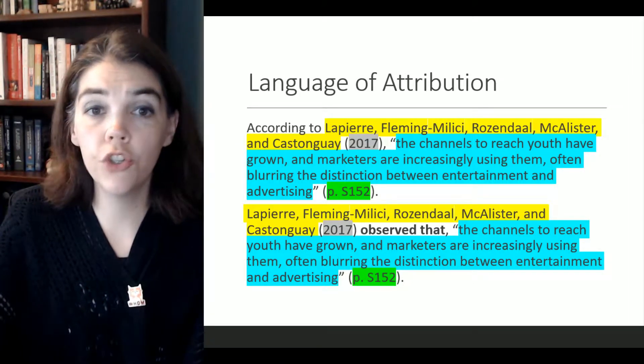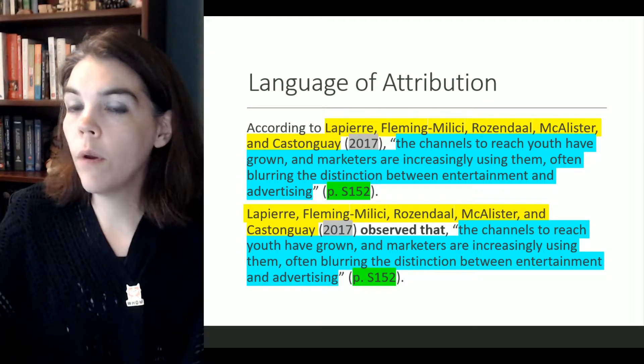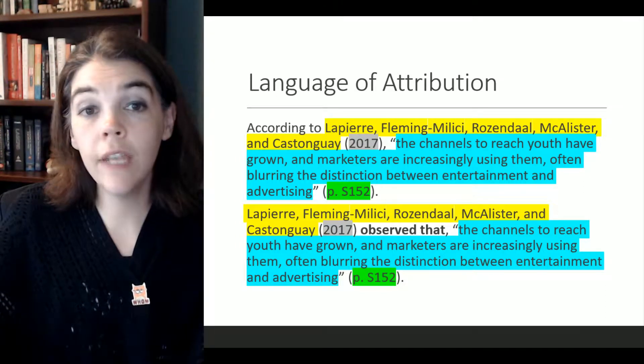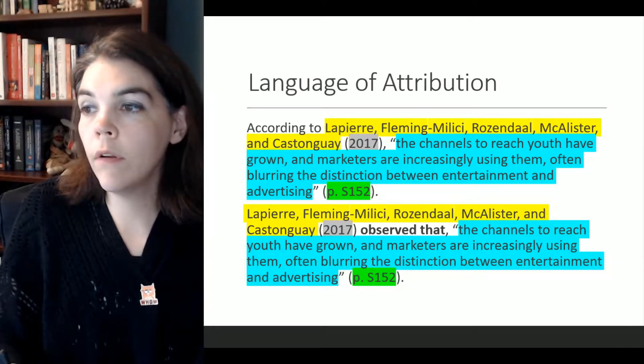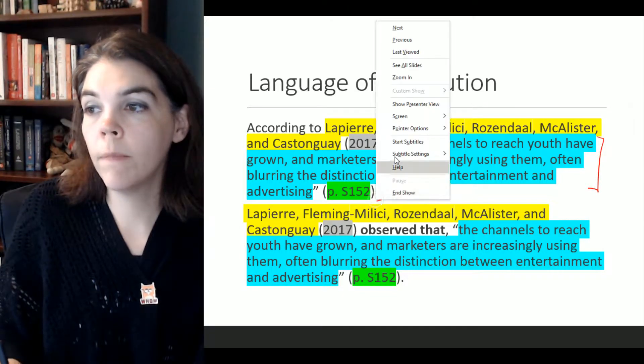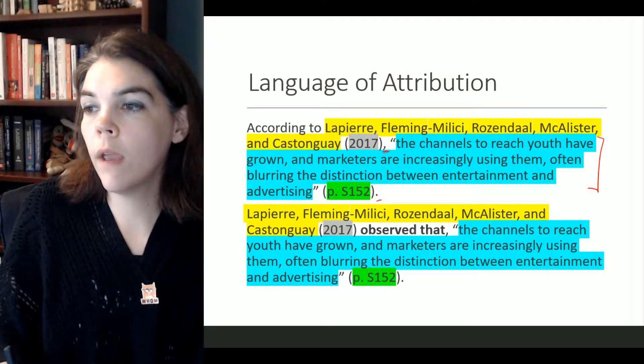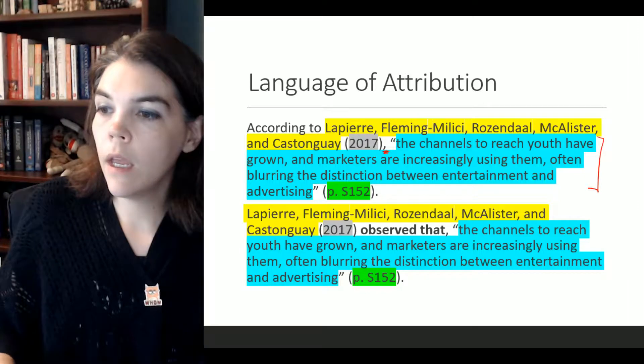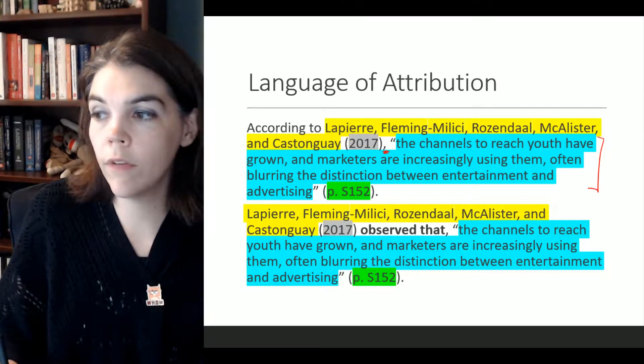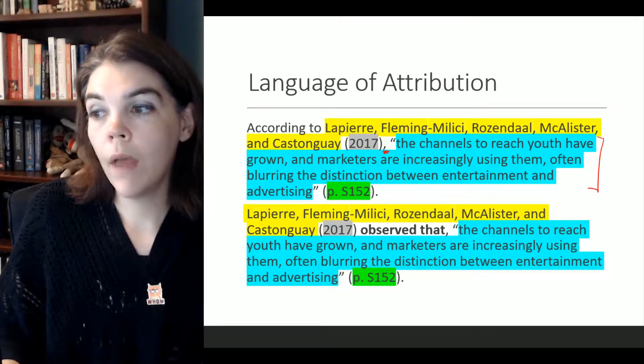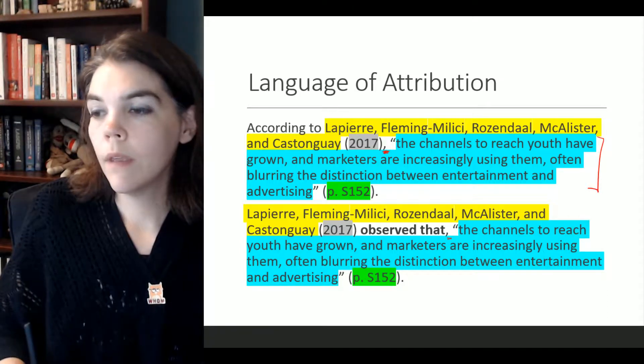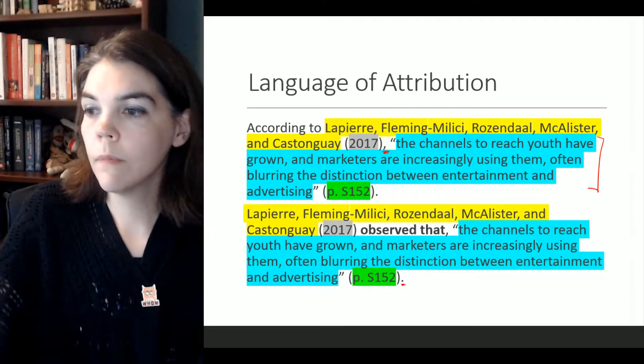So here are a couple examples that show you how this looks. This was that source that I mentioned in our first video. I've mentioned the author's last names, then I have the year of the publication, and then this whole part is my quote, and then I have a page number, and my period here. Notice that there's my comma right there. And same thing here. Maybe instead of according to, I want to use the authors as the subject. So they're the subject. Then I have my reporting verb. I have a comma. And then my quotation, my page number, and my period goes there.